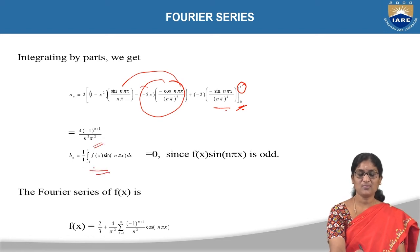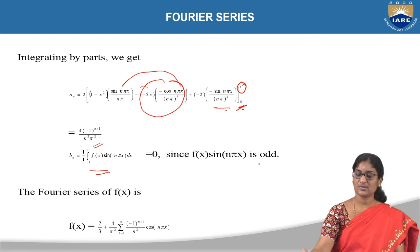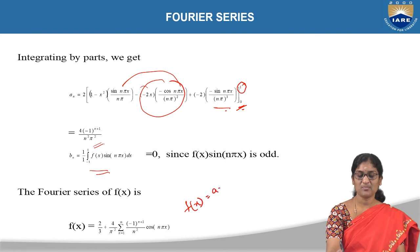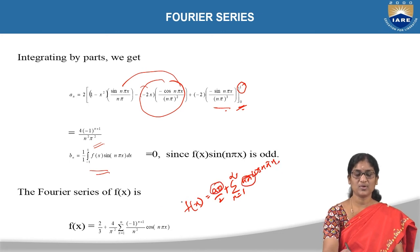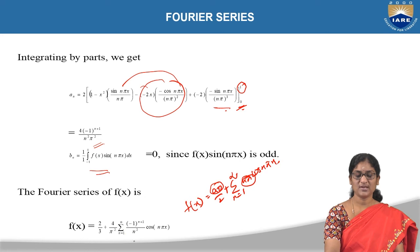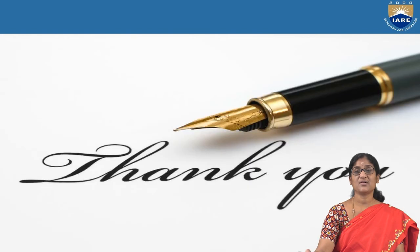For bₙ, since we already claimed the function is an even function, there is no need to find bₙ — it automatically equals 0. All three terms are now ready, and substituting into the Fourier expansion f(x) = a₀/2 + summation from n=1 to infinity of aₙ cos(nπx), we get: f(x) = 2/3 + (4/π²) × summation from n=1 to infinity of (−1)^(n+1)/n² × cos(nπx). This is the Fourier series expansion for f(x) = 1 − x².